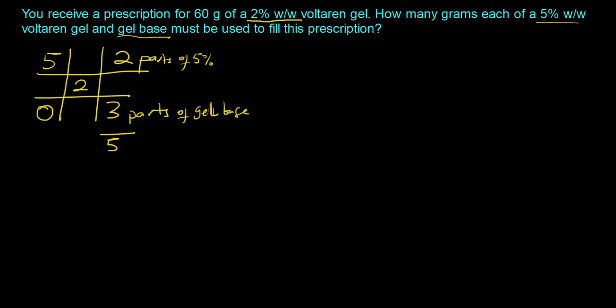Now, the total quantity is 60 grams. So the way we will do this is for the 5%, to figure out how much we will need, we will take the parts of the 5%, which is 2, divide that by the total parts, which is 5, and then we will multiply that by the total quantity, we are making 60 grams. So if we do the math on this, it will actually end up being about 24 grams. So that gives us 24 grams of the 5%.